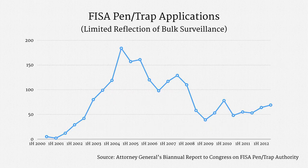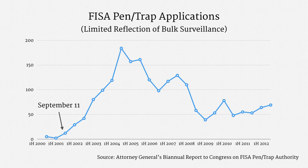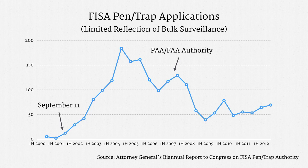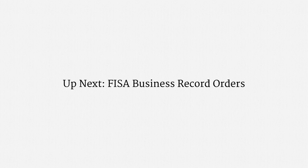In closing, I'd like to share some data on FISA pen trap applications. I want to be sure to note that this is a very limited reflection of bulk surveillance under the pen trap authority, but it does lend some insight into individual pen trap orders. I'd like to emphasize two features in the graph, both very similar to what we saw with FISA wiretap orders and physical search warrants. In the years following the September 11th attacks, FISA pen trap orders greatly increased. Then, after the executive branch received the Protect America Act and FISA Amendments Act surveillance authorities, FISA pen trap applications dropped off. That's likely because those new authorities were easier to use and, in particular, didn't require individual judicial authorization.